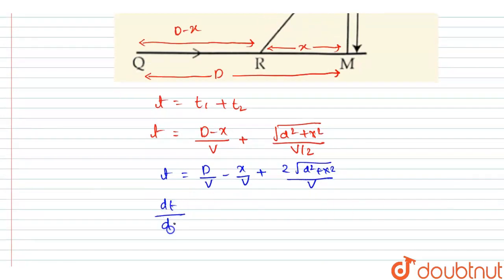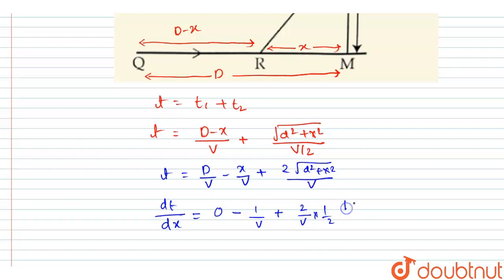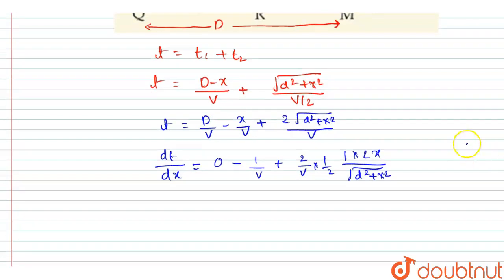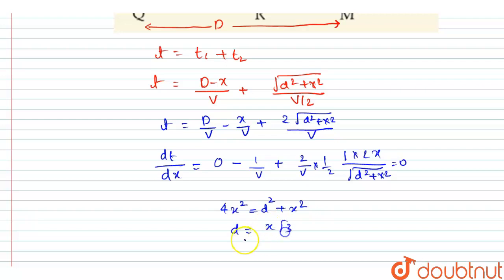Since we want the minimum value of T, I will differentiate T with respect to x and set that equal to 0. So dT/dx = 0 gives: −1/v + (2/v) · (2x)/(2√(d² + x²)) = 0. Solving this, we get 4x² = d² + x², which gives d = x√3, so x = d/√3.